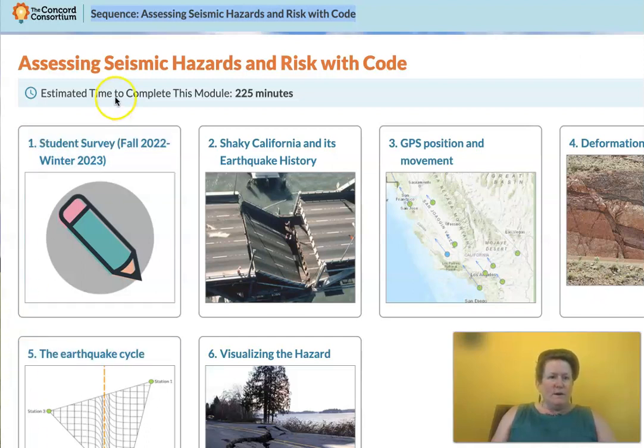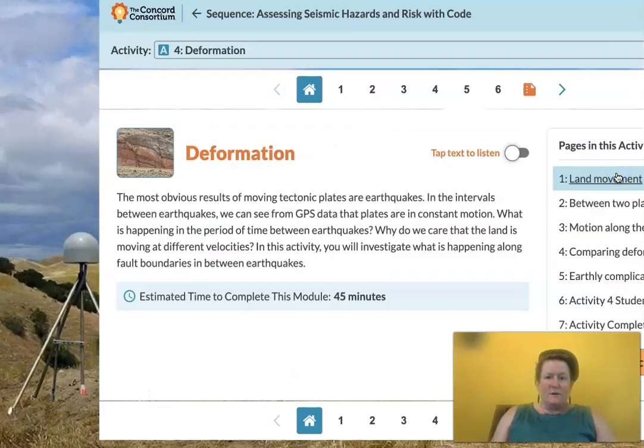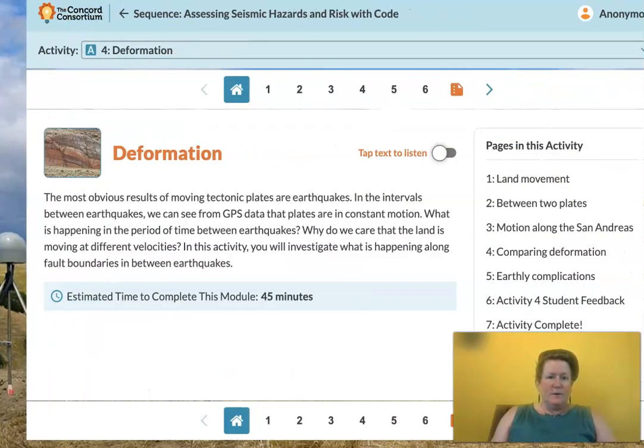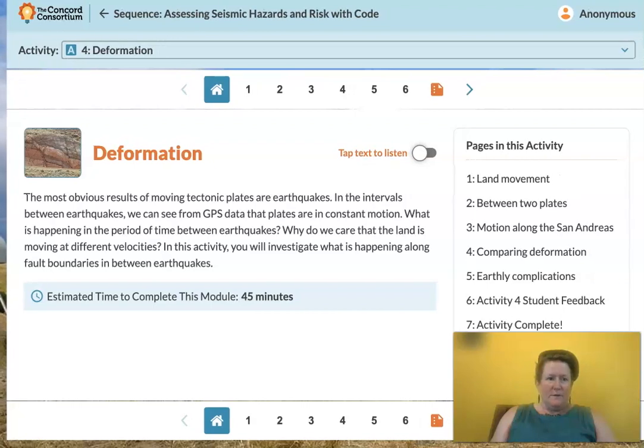Hello science students! We are going to do assessing seismic hazards and risk with code. That's in Concord Consortium at learn.concord.org. Instructions on how to get into the program are on your lab sheet.